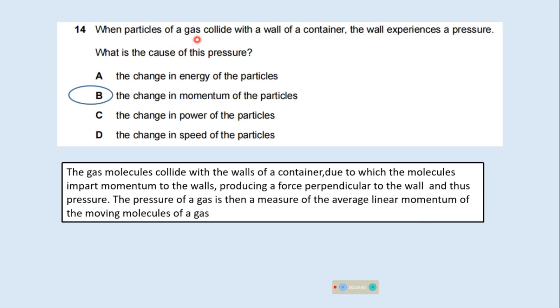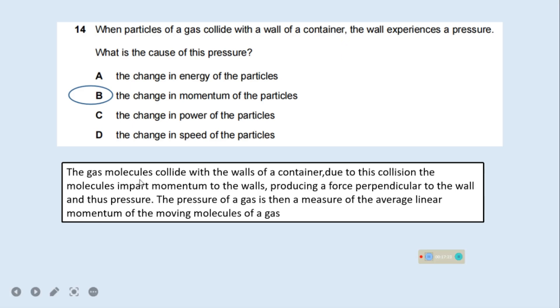When particles of a gas collide with a wall of container, the wall experiences a pressure. What is the cause of this pressure? When the gas molecules collide with the walls of a container, due to this collision the molecules impart momentum to the walls, producing a force perpendicular to the wall and thus the pressure. The pressure of the gas is a measure of the average linear momentum of the moving molecules of a gas. So the change in momentum of the particles is the correct answer. Option B is the correct answer.